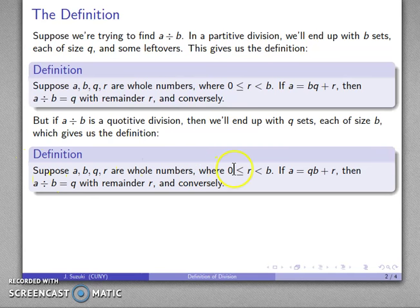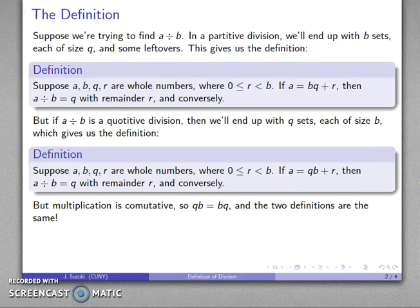So again, we have this definition. If I have A, B, Q, and R as whole numbers, where R is less than B, then if A gets me Q sets, each of size B plus my leftovers, then A divided by B is Q with remainder R, and importantly, conversely.